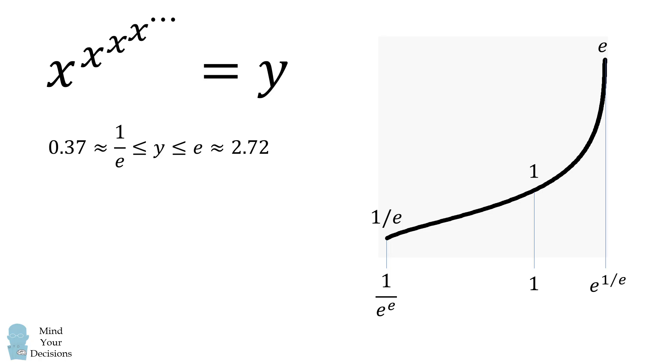So, the range of this function goes between 1 over e and e, and the domain is between 1 over e to the power of e, and e to the power of 1 over e. So, if you have values outside of these ranges, you're not going to get a solution.